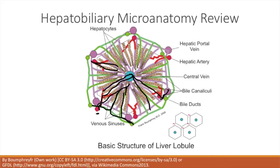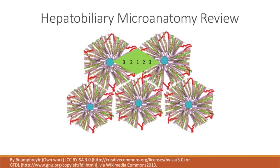We also have something called an acinus. The hepatic acinus is another way of structuring the function of the liver — it's not a clearly defined structure microscopically, but functionally it is, and it's divided into a few different zones. The first zone is going to be closest to the arterial blood flow, where you're going to have the most oxygen. Then you're going to have the second zone and the third zone.